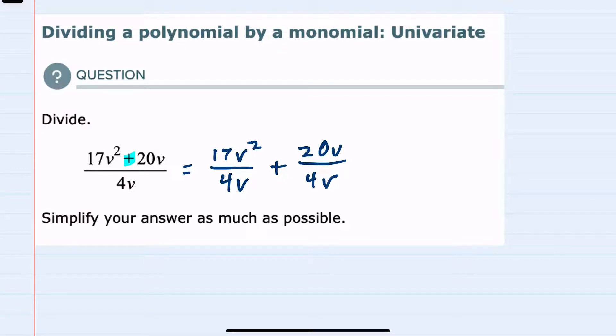And now that we have it separated and we have two terms each with a monomial in the numerator and a monomial in the denominator, I can cancel and simplify where possible.